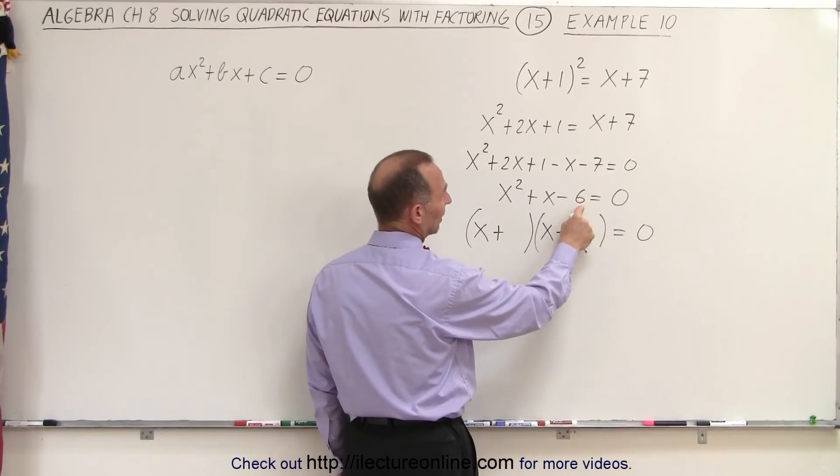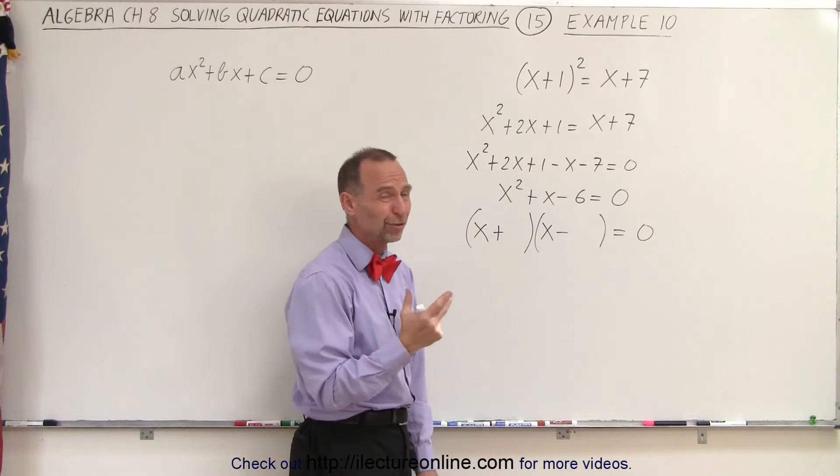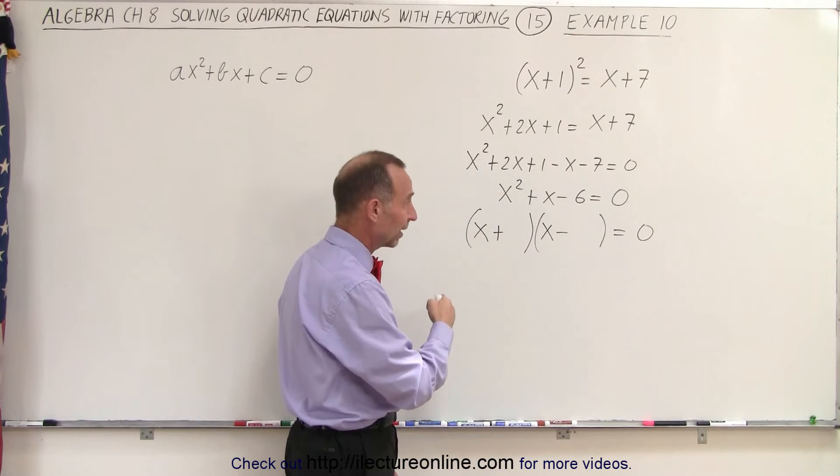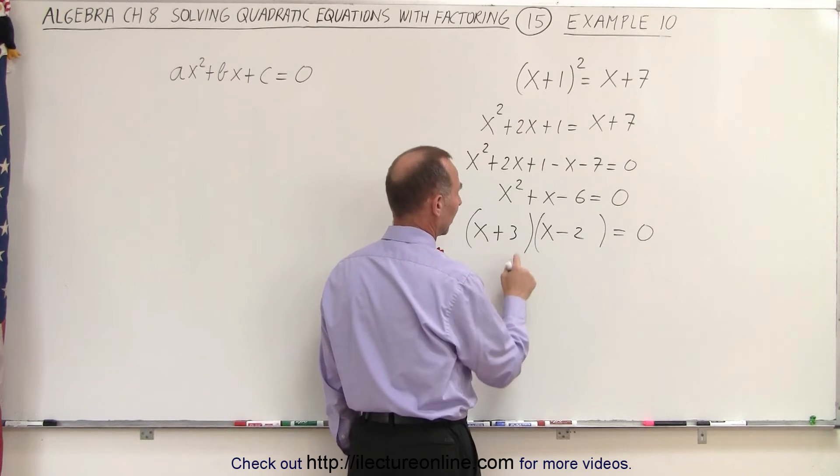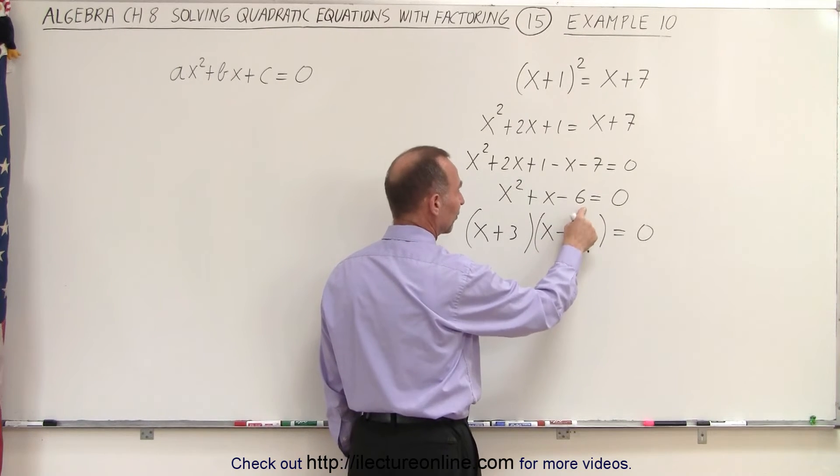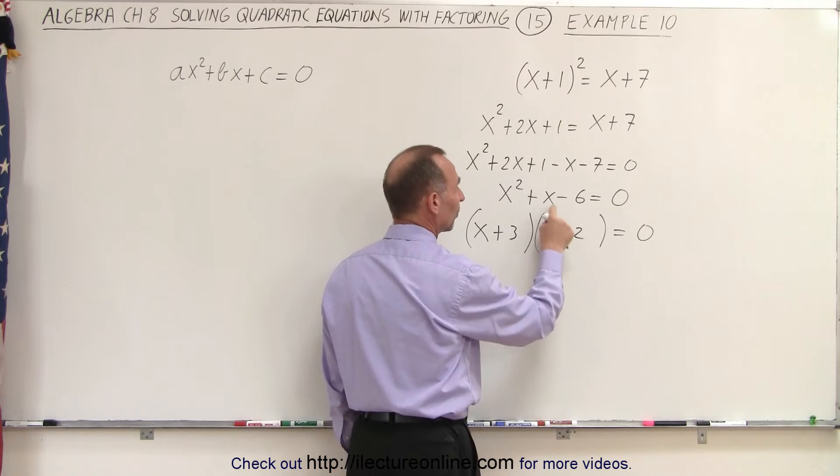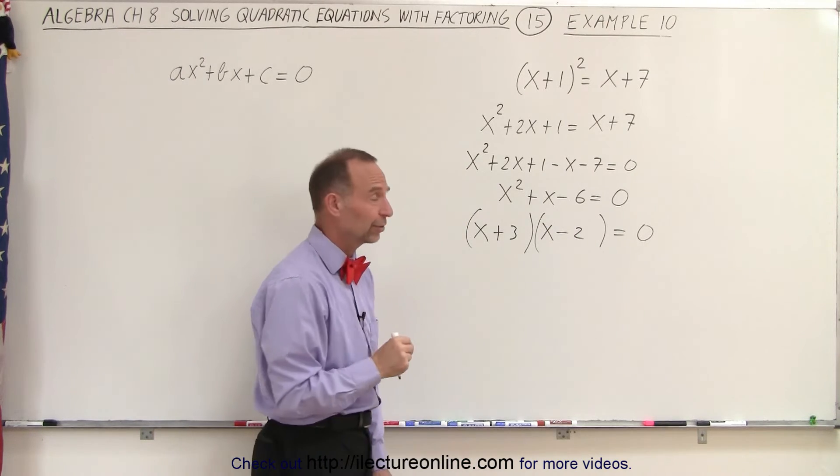When we multiply we get negative 6. When we add we get plus 1. Which means that the positive has to be 1 bigger than the negative. A plus 3 and a minus 2 will do the trick. 3 times negative 2 is negative 6. Plus 3 minus 2 is a plus 1. So we know we factored it correctly.